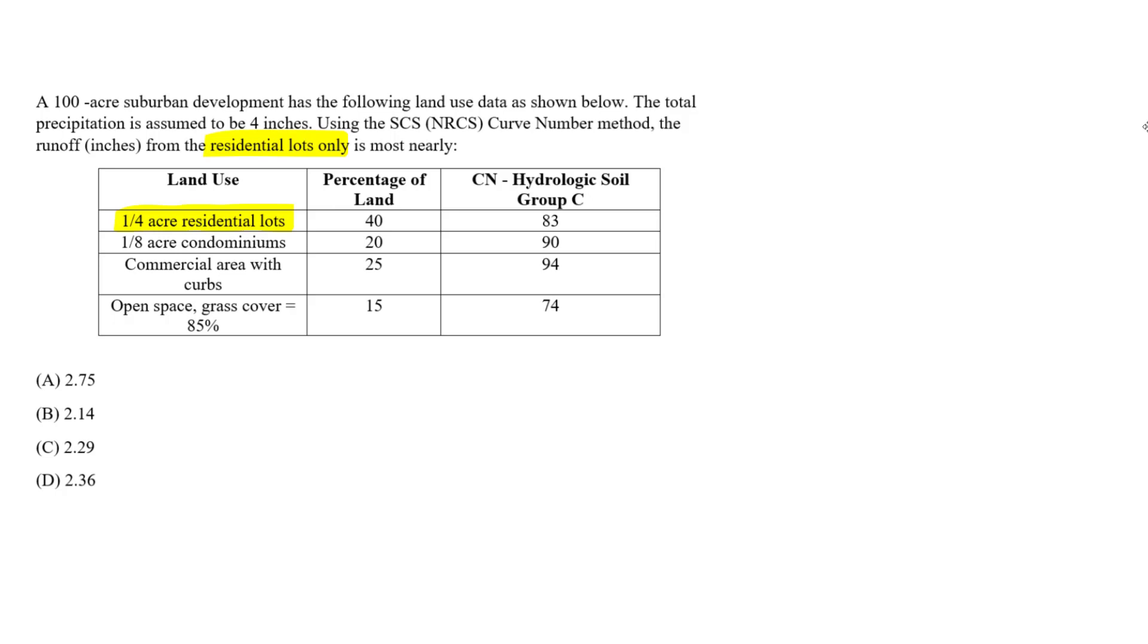And we're given this curve number for each, which depends on the hydraulic soil group. This is usually given in a table format in our books or specific tables we use, but this is given to us, this curve number for our residential lots. We're also given these for the condominiums, commercial areas, and open space or grass cover. You see how this is the lowest for this one for the curve number. But what we're going to use for this question is this curve number.